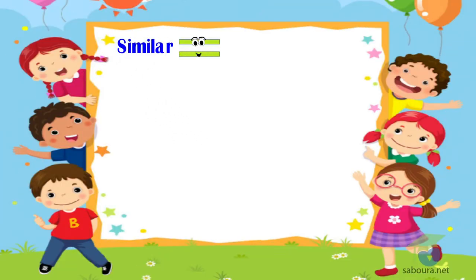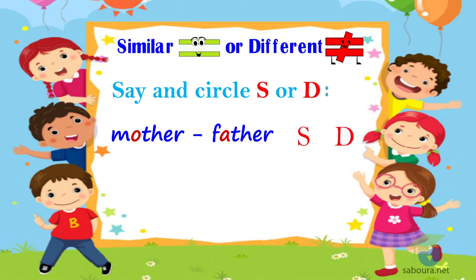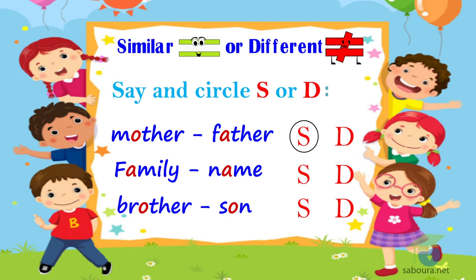Similar or different — say and circle S or D. Mother / Father — circle S, similar. Family / Name — circle D, different. Brother / Son — circle S, similar.